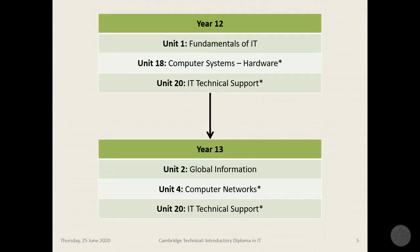Here's a look at the units. In year 12, we've got Unit 1: Fundamentals of IT, and Unit 18: Computer Systems Hardware. You'll notice that Unit 20 is in both year groups and you'll add evidence as you go. In the second year, it's Unit 2: Global Information, and Unit 4: Computer Networks.